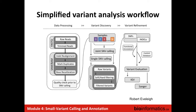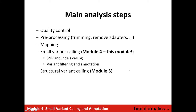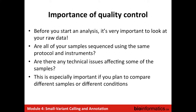This is the workflow we have been working on since yesterday. Yesterday we saw all the data processing, and today we cover the second part. To summarize: quality control when you receive the data, then pre-processing to obtain the highest quality data, then mapping, processing the mapping to improve alignment, and then small variant calling.